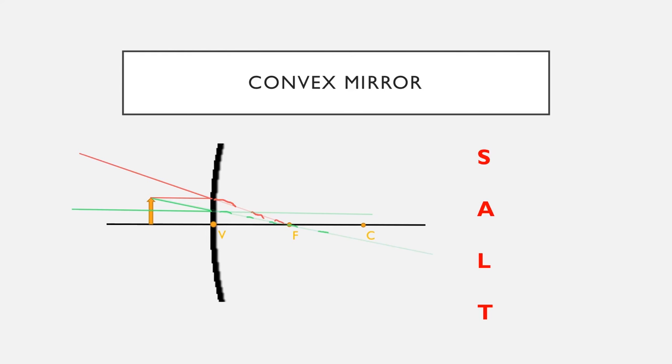This is the light that is most important to us because this is the one that's going to help us figure out where our image is. So if we follow this line and we're going to see that again, this red and green dotted lines intersect right here, which means this is where our image is going to be.